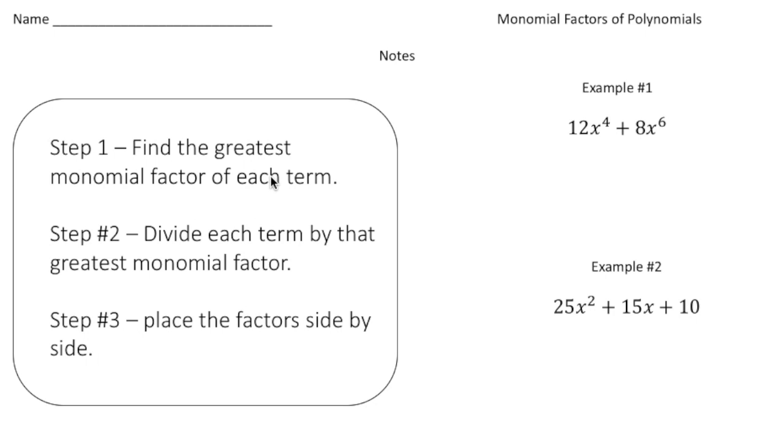So what you do first is you find the greatest monomial factor of each term. I want to find the GCF of 12x to the fourth and 8x to the sixth. So remember what you do is you first look at the coefficients and you say what is the greatest common factor of 12 and 8, and that would be 4. So 4 is our first part, and then you look at the monomials with the x's. We have x to the fourth and x to the sixth, and remember you take the one that has the smallest power. So in this case it's going to be x to the fourth. So it's going to be 4x to the fourth. So 4x to the fourth is the GCF of 12x to the fourth plus 8x to the sixth. So that's part one.